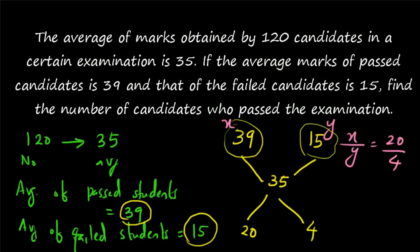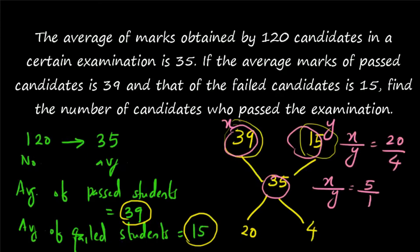That is the basic principle of allegation. Once you write the equation — 39 and 15 combined together give 35 — you find the difference between 39 and 35, and between 35 and 15. You get x to y equal to 20 to 4, or x to y equal to 5 to 1. So what is our question? We have to find out x — the number of passed candidates.